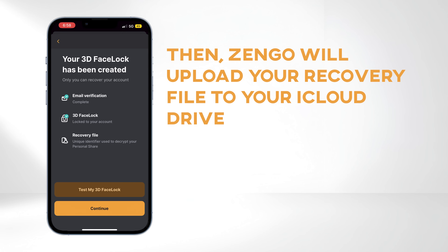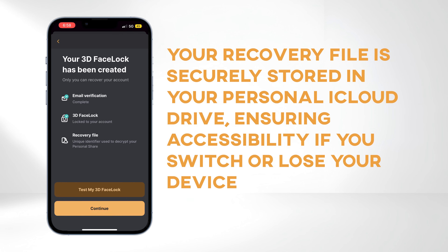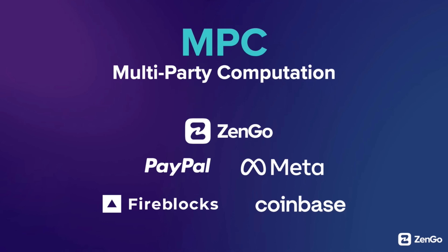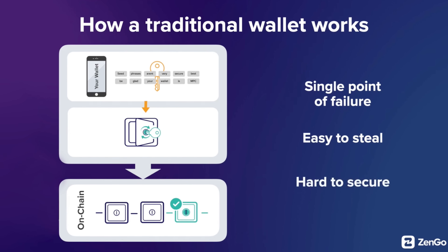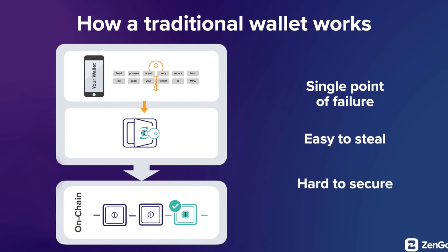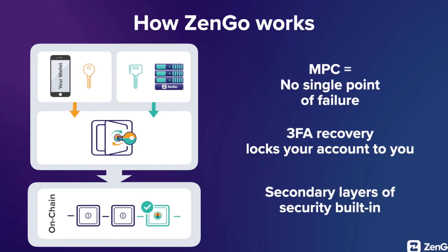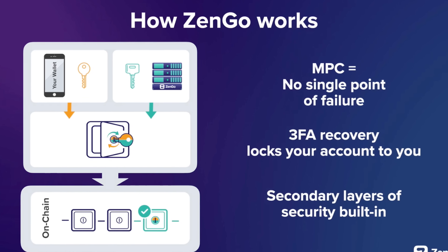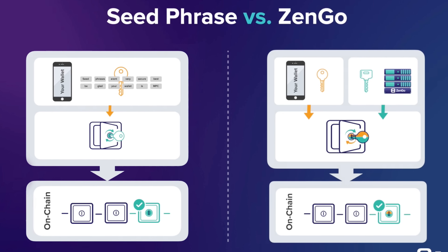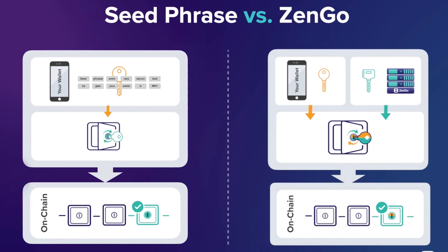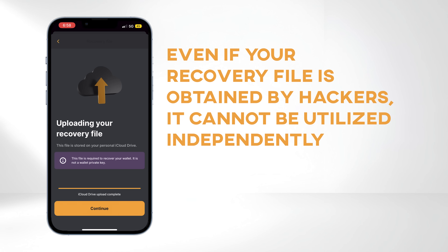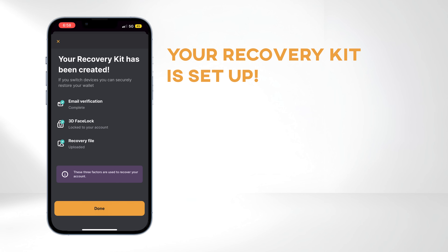Zengo will upload your recovery file to your iCloud drive. Your recovery file is securely stored in your personal iCloud drive, ensuring accessibility if you switch or lose your device. Zengo uses MPC cryptography instead of seed phrases or private keys to avoid seed phrase vulnerability. With MPC, multiple parties can collaboratively execute cryptographic functions without revealing their individual secrets. This ensures protection against private key theft and loss. The recovery file alone is essentially useless to hackers — even if obtained, it cannot be utilized independently. Your recovery kit is now set up.